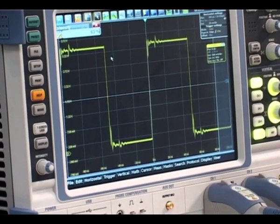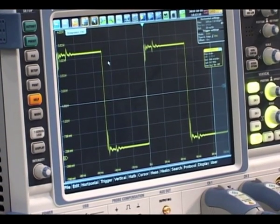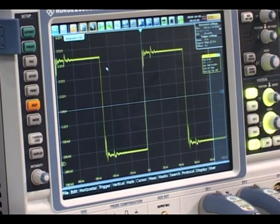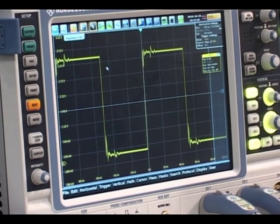The reason we can see this flicker is the very fast update rate of these scopes. These scopes can sample data and display up to a million times per second which is unprecedented, particularly if you're looking for rare faults, glitches, or transients on a signal.